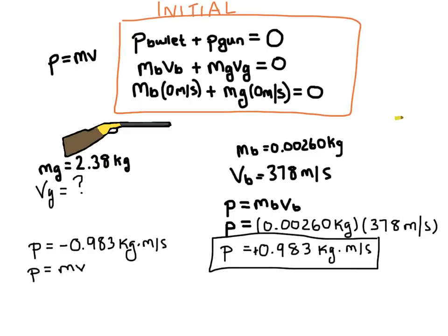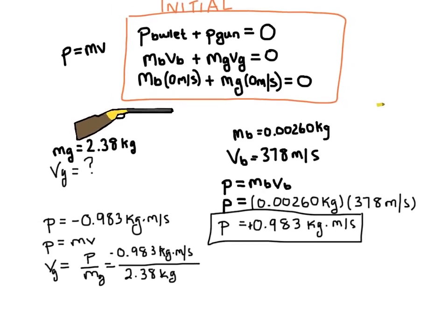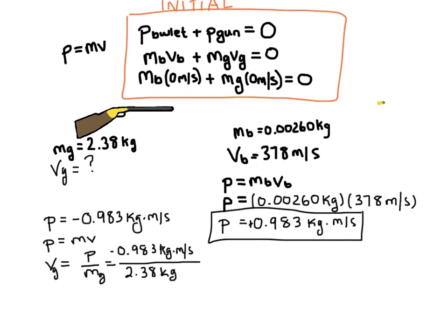Here's our equation for momentum. I'm going to rearrange it to solve for velocity. And now I can go ahead and plug in my numbers. And again, this is calculating for the gun. So I have the momentum of the gun divided by the mass of the gun.